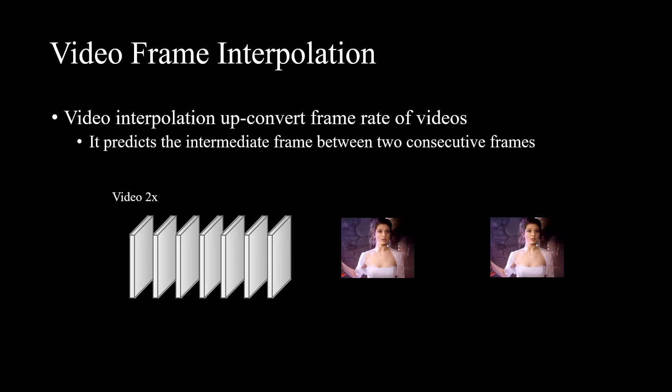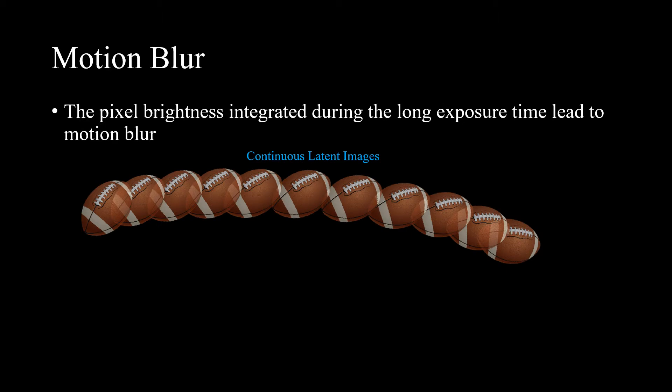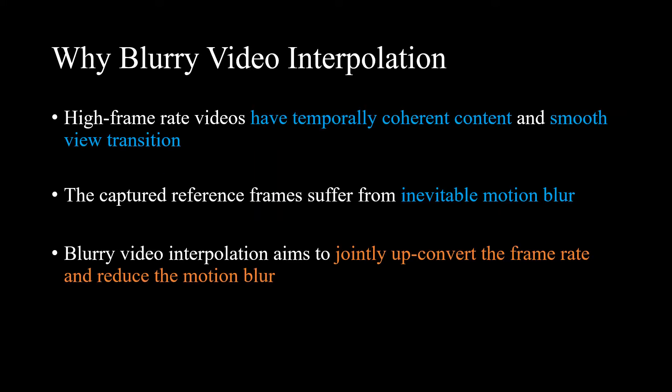The goal of video frame interpolation is to increase the frame rate. It predicts the intermediate frame between two consecutive frames. Generally, a camera captures videos by periodically turning on and off its shutter. While the shutter is on, also known as exposure, the sensors integrate the luminous intensity reflected by the objects to acquire the brightness of pixels. The pixel brightness integrated during long exposure time leads to motion blur. High frame rate videos with temporally coherent content are preferable, but the captured reference frames may suffer from inevitable motion blur.